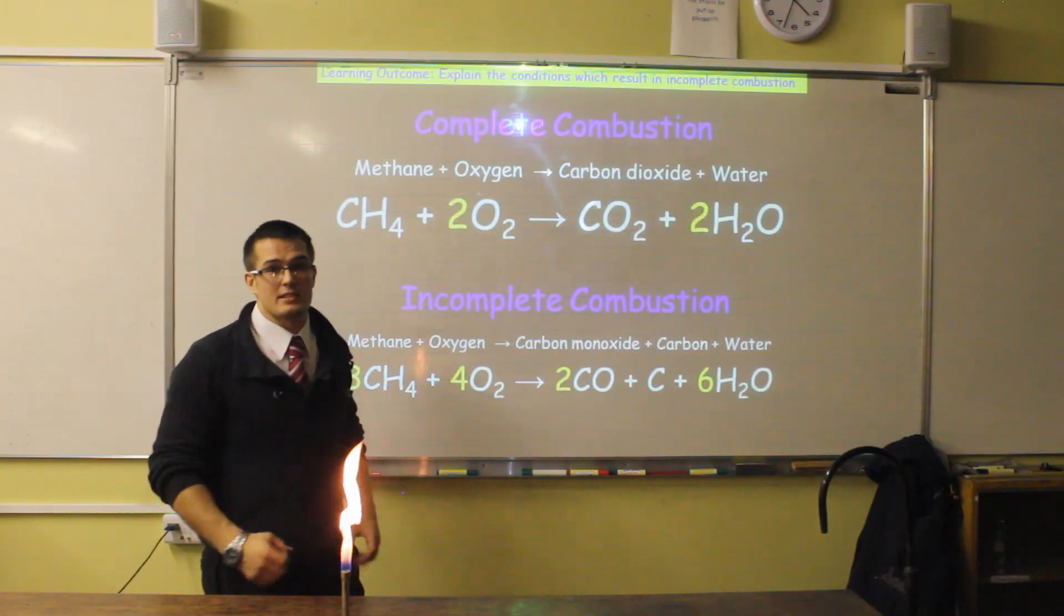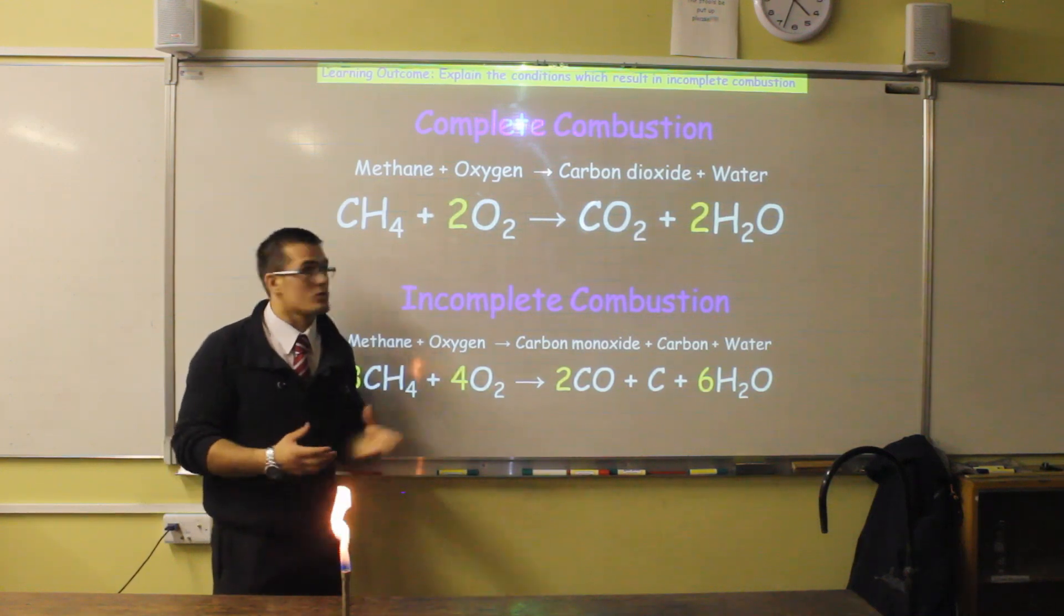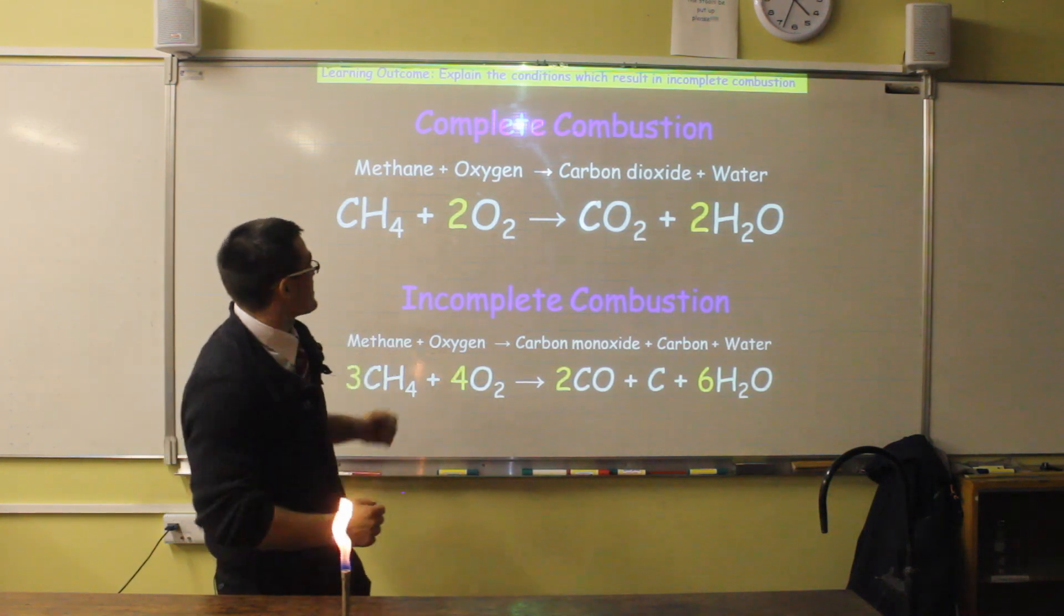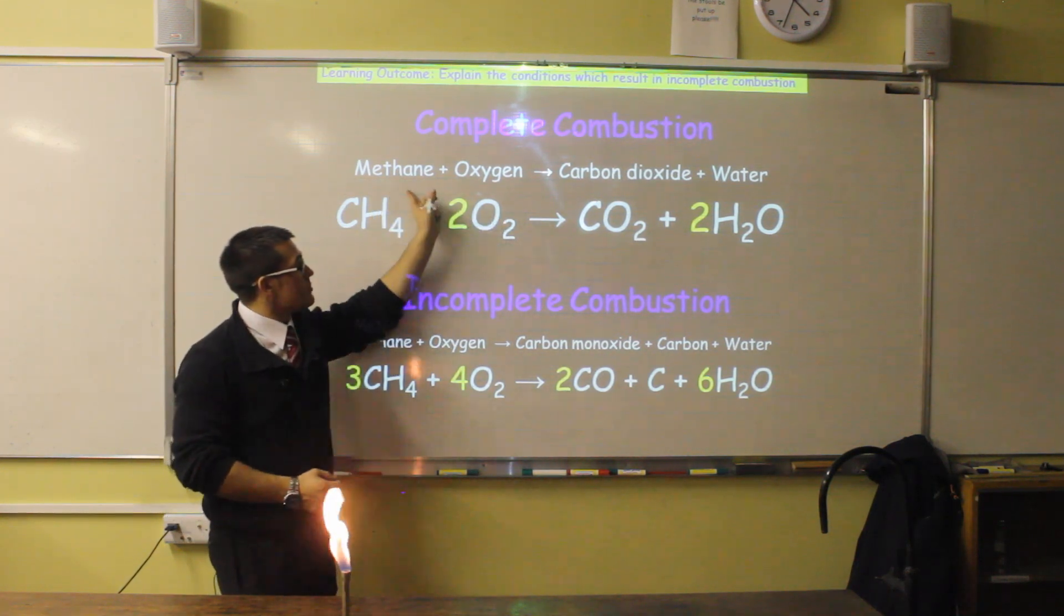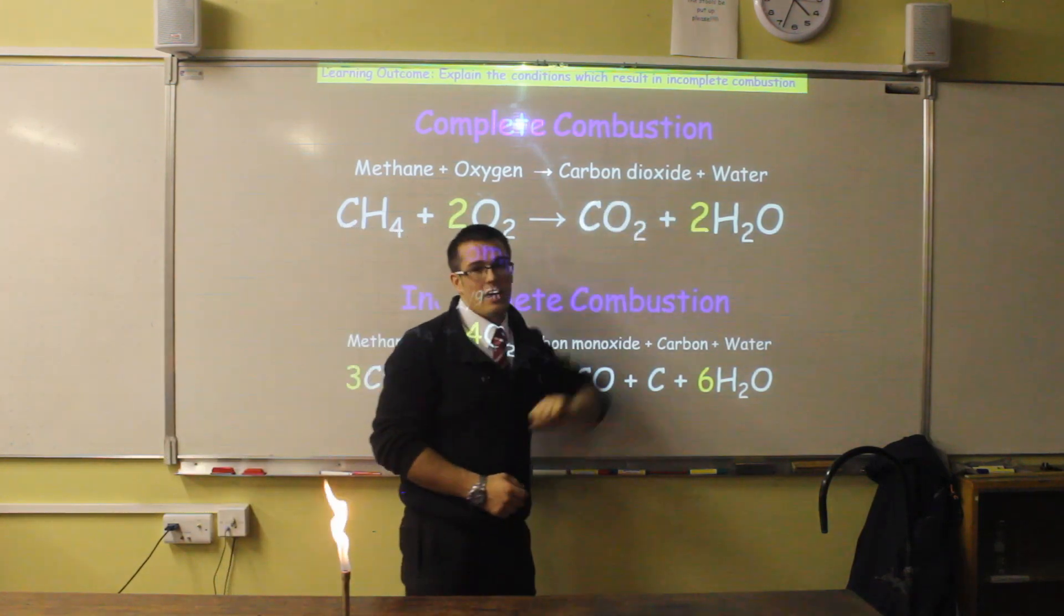The first part of this lesson is to understand what is combustion. Combustion is when we burn something and react it with oxygen. For example, I'm burning methane gas in our Bunsen burner, so this equation: methane plus oxygen, and the two products we get are carbon dioxide and water.